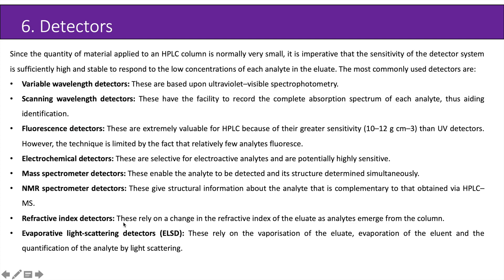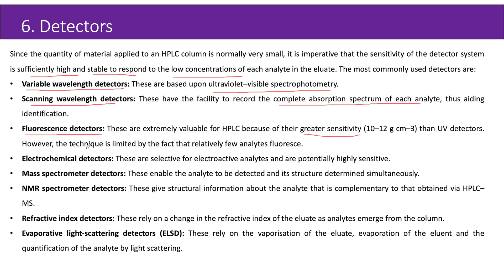Next are the detectors. Since the quantity of material applied to an HPLC column is normally very small, it is imperative that the sensitivity of the detector system is sufficiently high and stable to respond to the low concentrations of each analyte in the eluate. The most commonly used detectors are: variable wavelength detectors, based upon UV-visible spectrophotometry; scanning wavelength detectors, which have the facility to record the complete absorption spectrum of each analyte, thus aiding identification; and fluorescence detectors, which are extremely valuable for HPLC because of their greater sensitivity than UV detectors, though limited by the fact that relatively few analytes fluoresce.